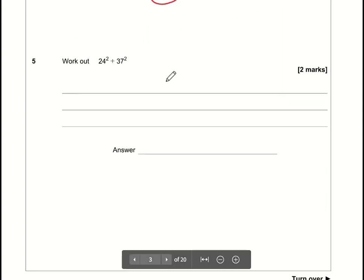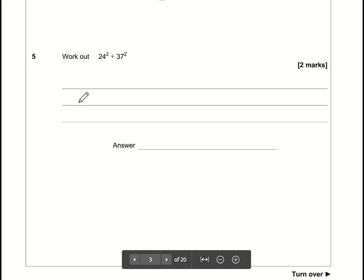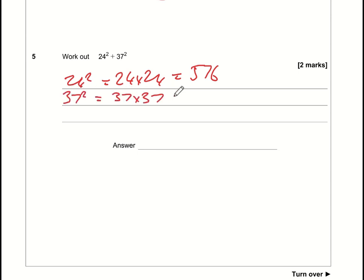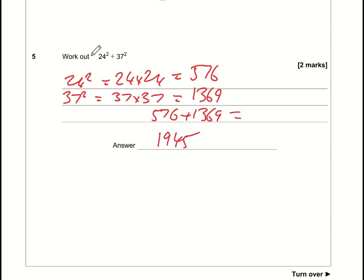For this question we need to square 24, which is 24 × 24 = 576. 37 squared is 37 × 37 = 1369. Add the two together: 576 + 1369 = 1945. You might be able to type that straight into your calculator and still get 1945.